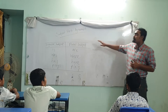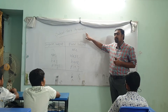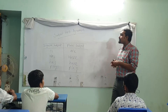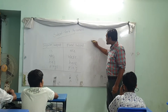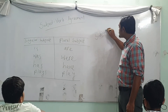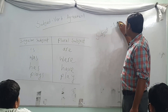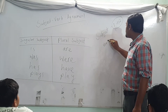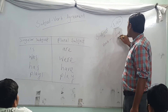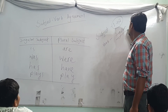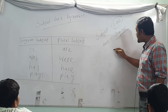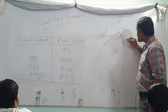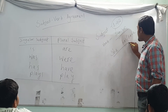So what is subject-verb agreement? Subject-verb agreement means the subject and verb agree with each other. For example: 'She has' — not 'have'. When the subject is singular, we use 'has'.